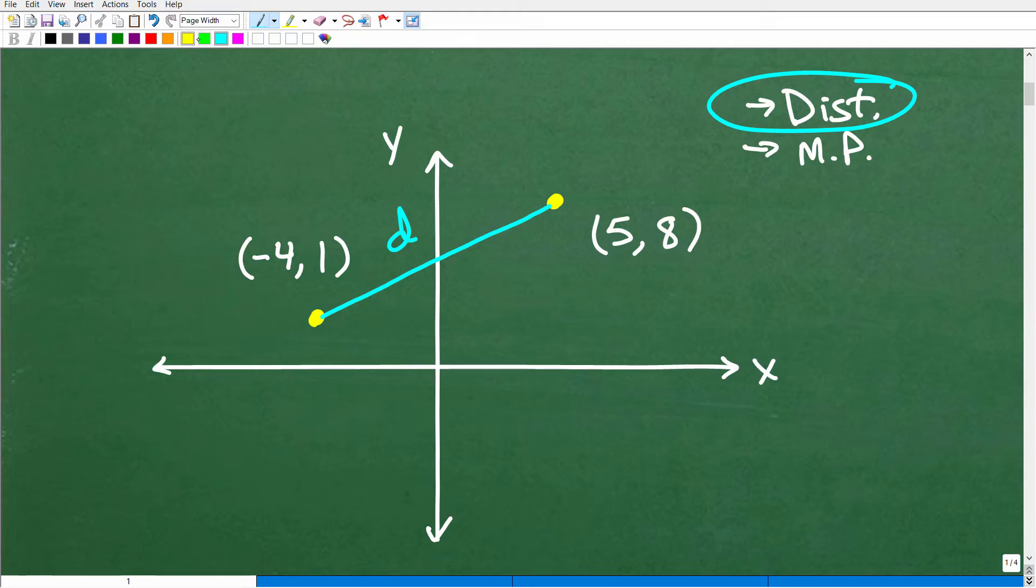So what does the midpoint formula tell us? Well, let's just kind of think about the name midpoint, maybe like the halfway point between these two points. Well, that's exactly what the midpoint formula tells us. The distance formula is going to give us actual distance. It's going to give us length.